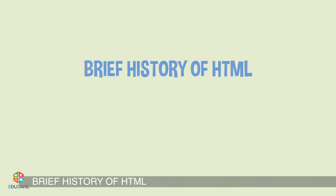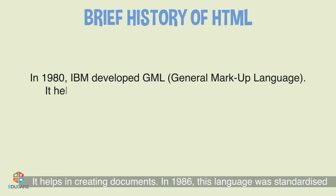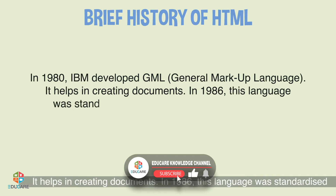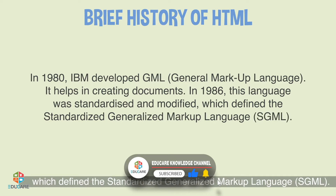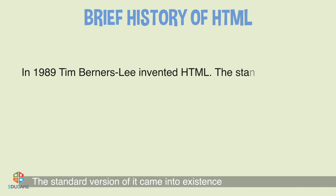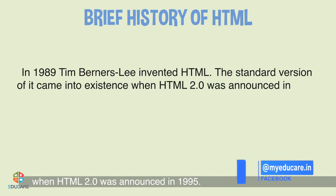Brief History of HTML: In 1980, IBM developed GML, i.e. General Markup Language, which helps in creating documents. In 1986, this language was standardized and modified, which defined the Standardized Generalized Markup Language, i.e. SGML. In 1989, Tim Berners-Lee invented HTML.